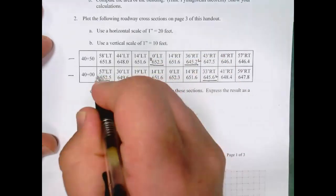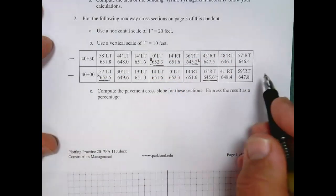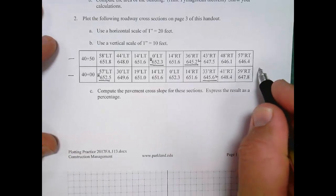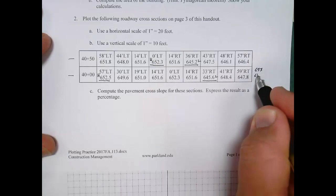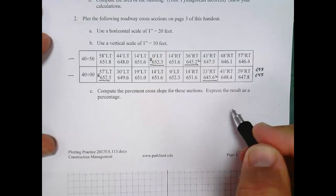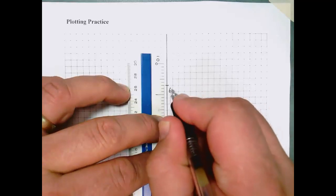So we've got the high and the low elevation. So let's think about this. The next whole number above both of those highest elevations would be 653, and the next whole number below the lowest would be 645.